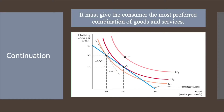Points A and B both lie on the budget line, meaning the consumer exhausts all income at either point. By moving to point A from point B, the consumer spends the same amount of money but achieves the increased level of satisfaction associated with indifference curve U2, since U2 gives more satisfaction than U1. Baskets to the right and above U2, like those on U3, achieve higher satisfaction but cannot be purchased with the available income.